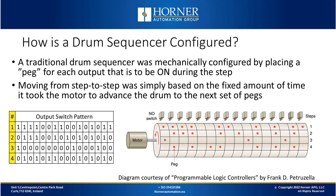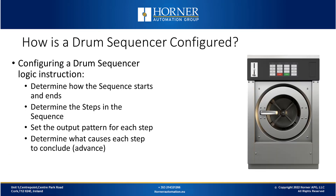With the drum sequencer logic instruction available on modern PLCs we have a lot more flexibility. To configure our drum sequencer instruction, we start by determining how our sequence starts and ends — what prompts it to start and what finishes it at the end. Then we determine each individual step and for each we determine which outputs need to be on and which off — called an output pattern. For every step we also determine what causes that step to advance to the next.